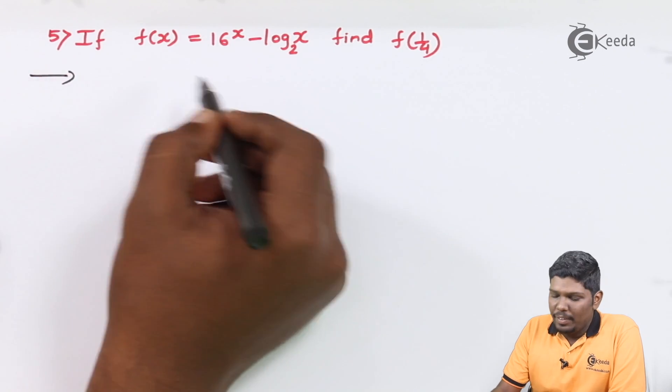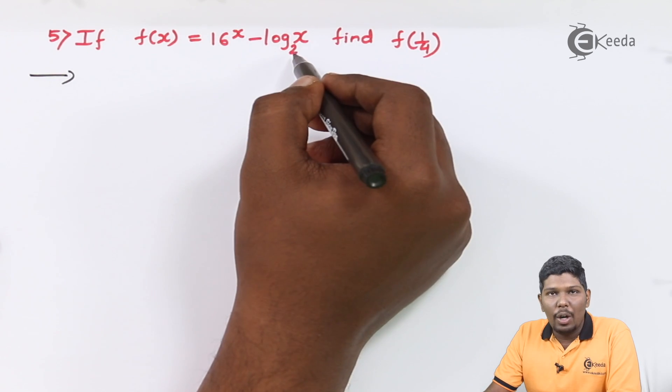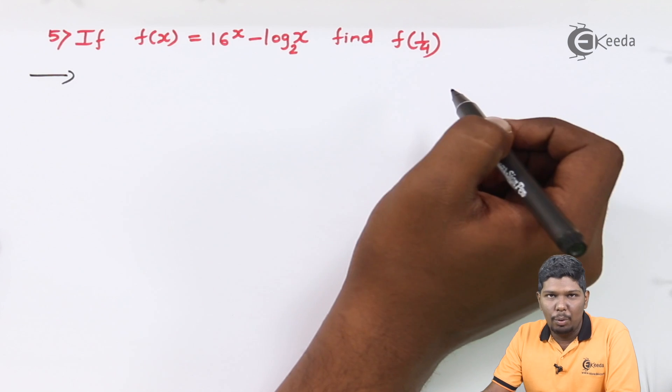The problem goes: if f(x) is equal to 16 raised to x minus log x to the base 2, find f of 1 by 4.